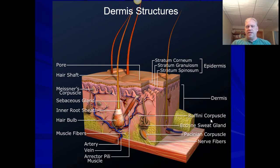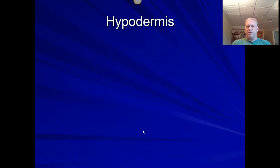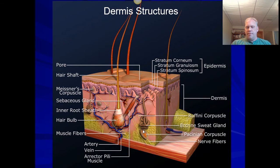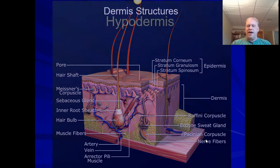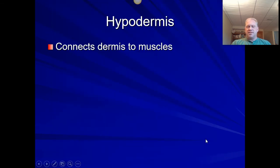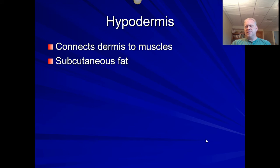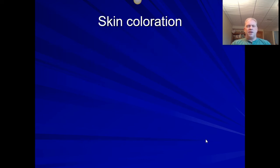So we have different types of glands found within the skin — sebaceous oil glands lining the hair, glands for cooling, and so on. Make sure you're familiar with the terminology. One more layer below the dermis is the hypodermis, which connects the skin to the muscle itself through lots of fibers. This is also the area that contains our subcutaneous fat.